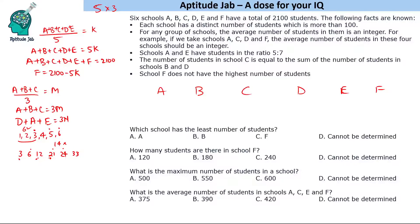Likewise, if we take a combination of four schools, the sum should be a multiple of 4. So the numbers must also be multiples of 4. Essentially, all numbers A, B, C, D, E, F must be multiples of the LCM of 1, 2, 3, 4, 5, 6, which is 60.